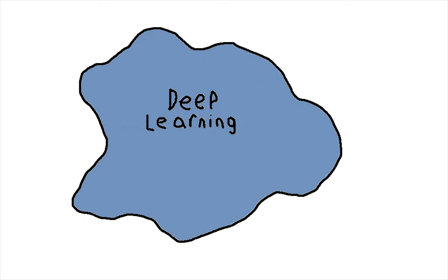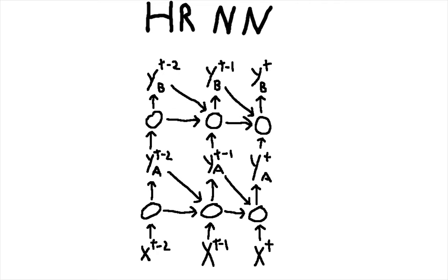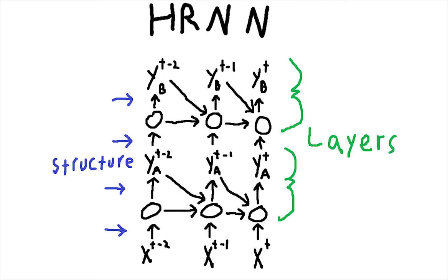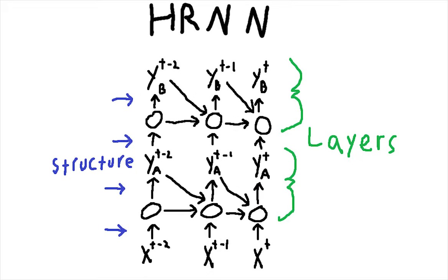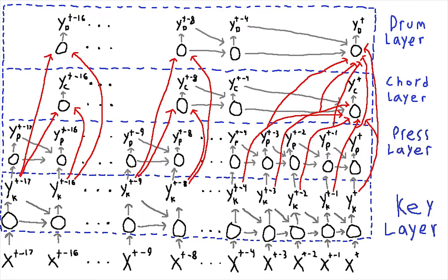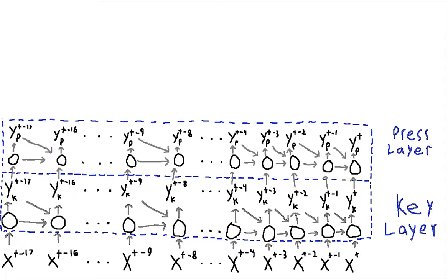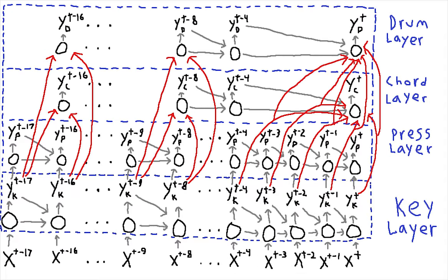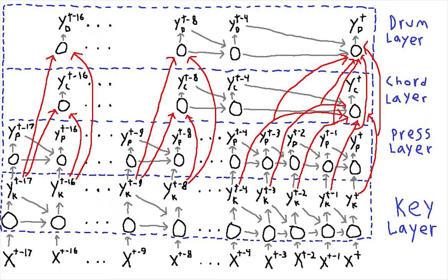The last method I'll discuss is deep learning, more specifically, hierarchical recurrent neural networks. HRNNs can be used to generate music by using the layers and overall structure of the hierarchy to encode the music theory and principles used in whatever genre of music you'd like to generate, as shown here. In this instance, the key and press layers encode what pitch is being played and the duration of that key press, and the chord and drum layers generate a chord and drum pattern based on the melody created by the key presses.